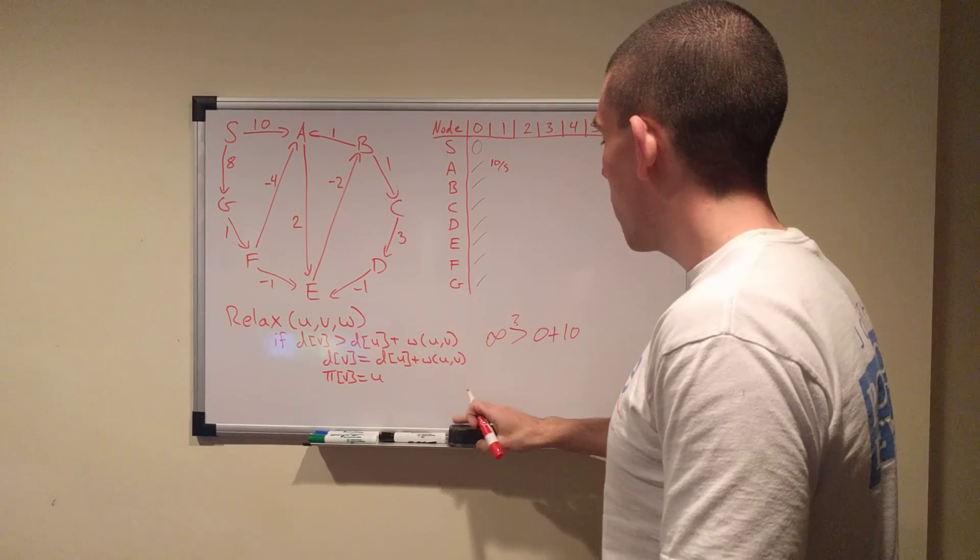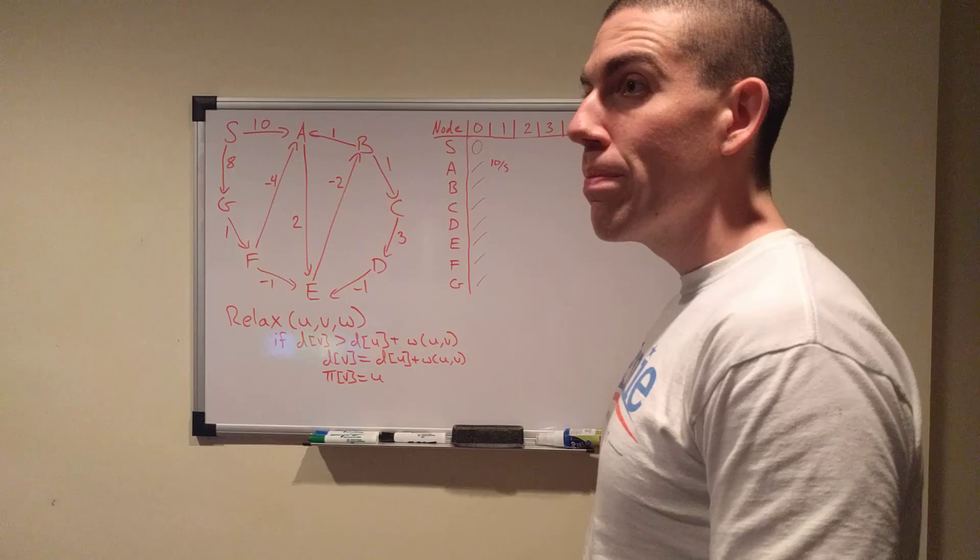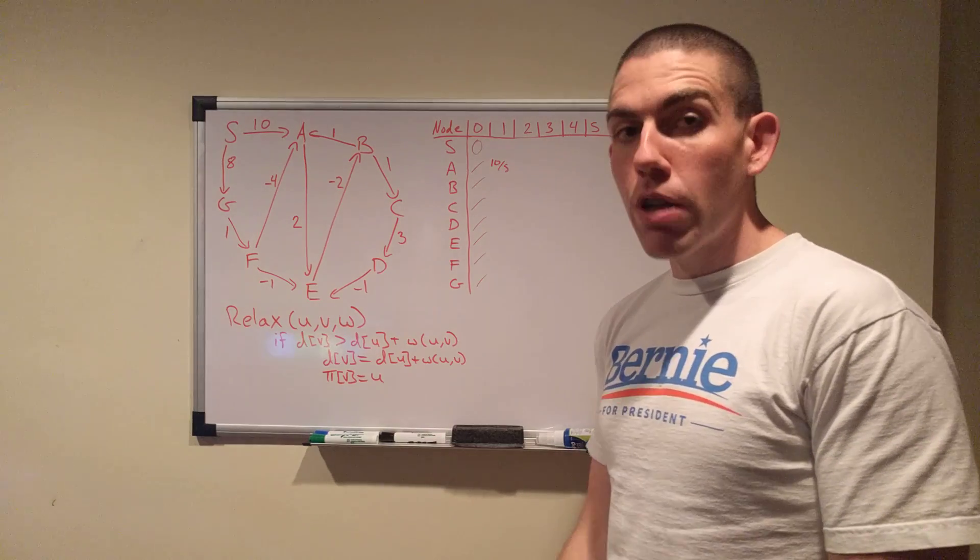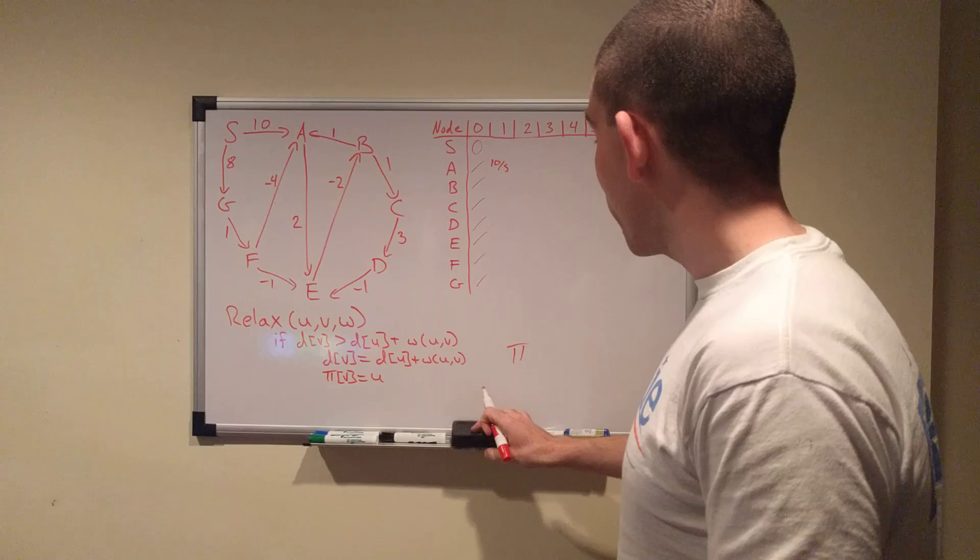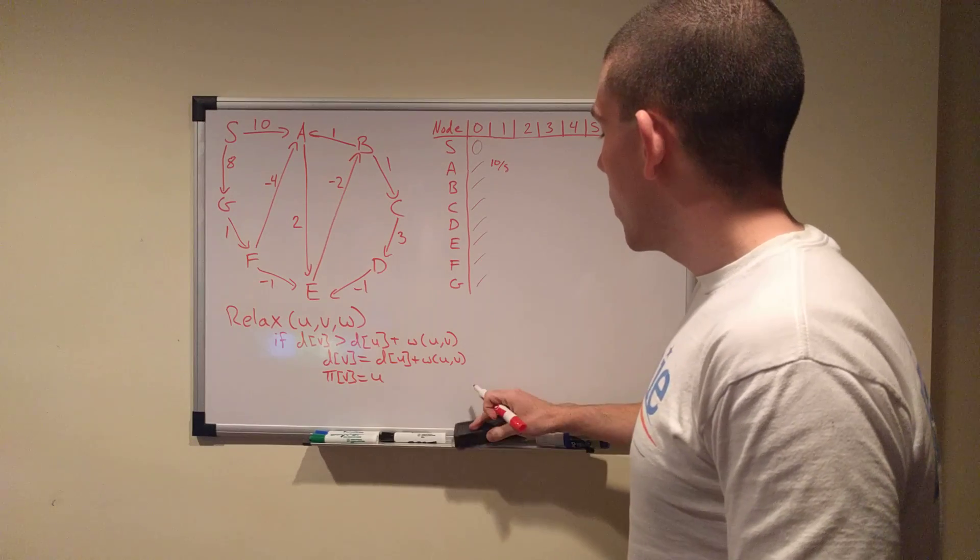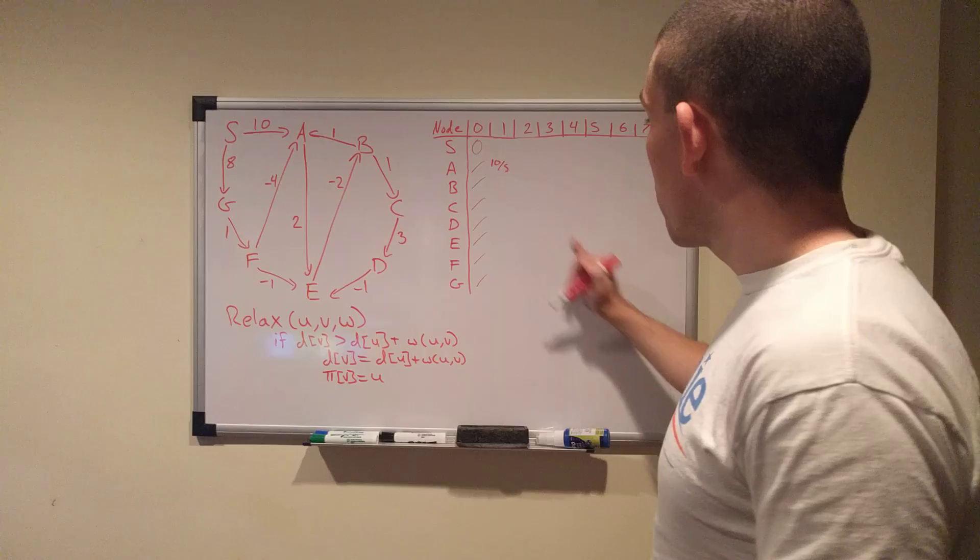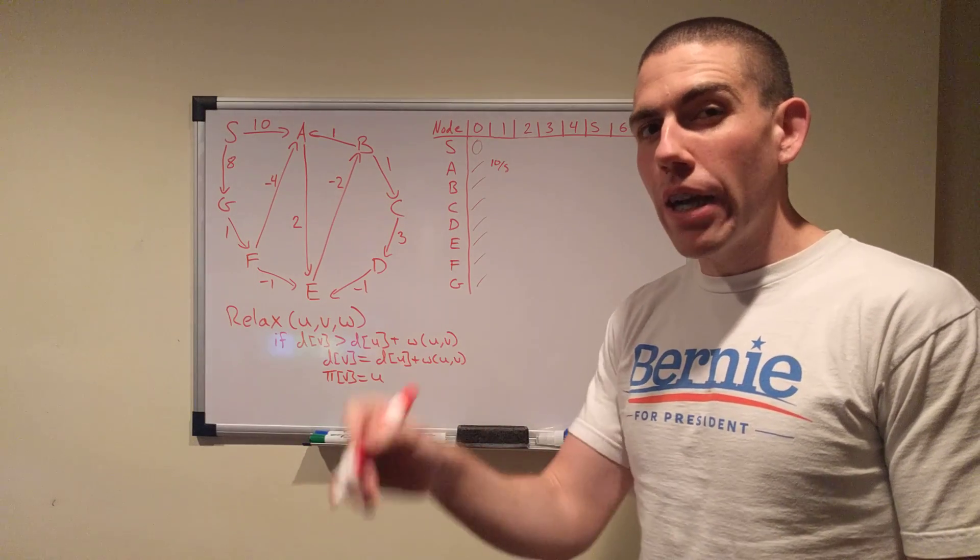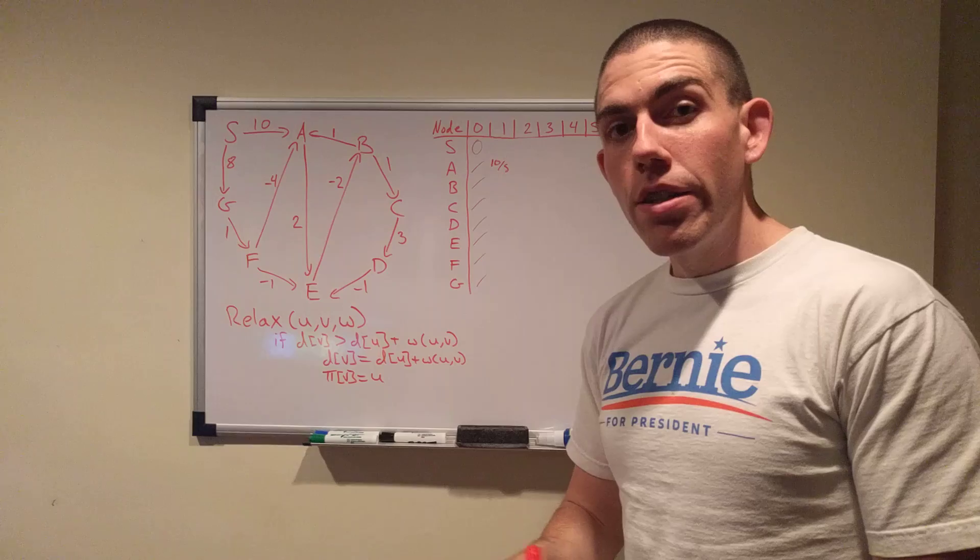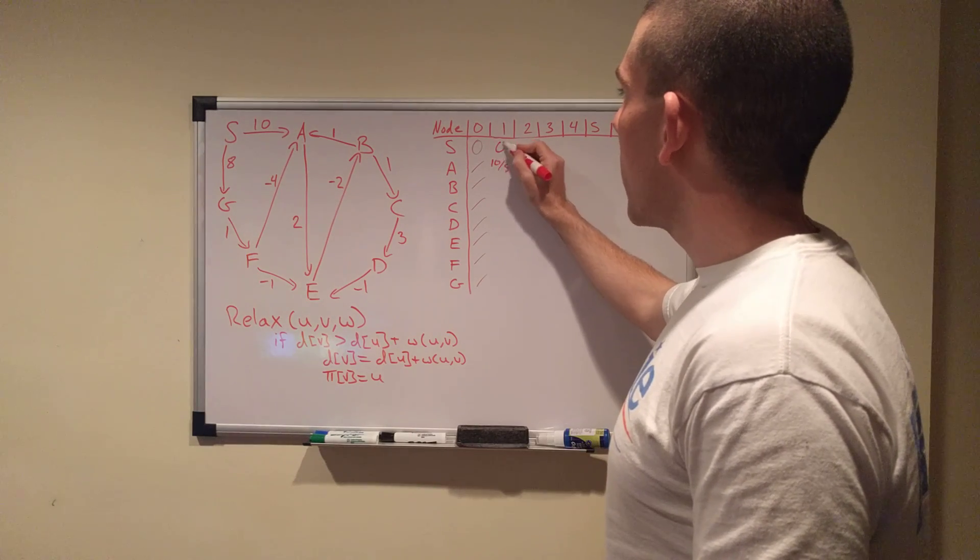And this slash vertex name is just the convention that I'm using to display what's going on in the previous array, the pi array that we had in the previous video. That just tells you how we got here. And when we're done, in the end, I'll show you how that allows us to backtrack and print out the actual route that we took to get the shortest path.